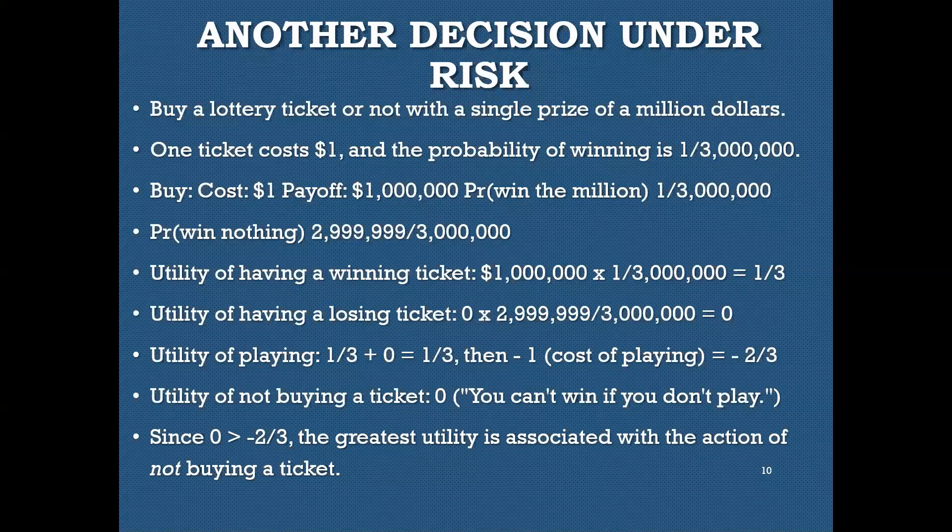In part two, we're going to look at decisions under certainty, which are very straightforward, and decisions under uncertainty, which have some interesting twists. And finally, we'll consider the gambler's fallacy in part two.